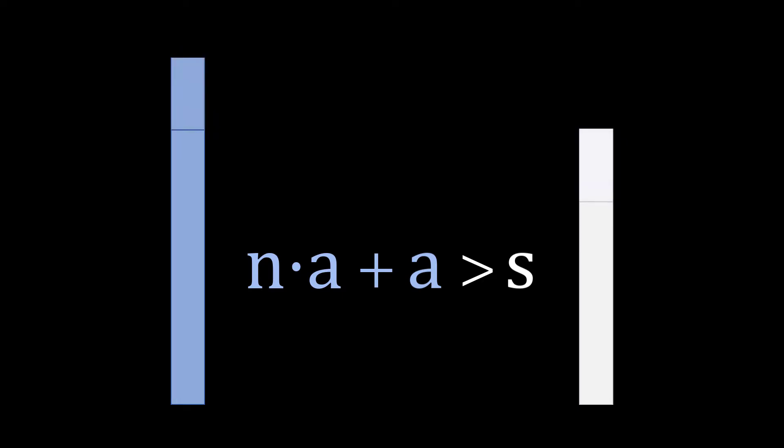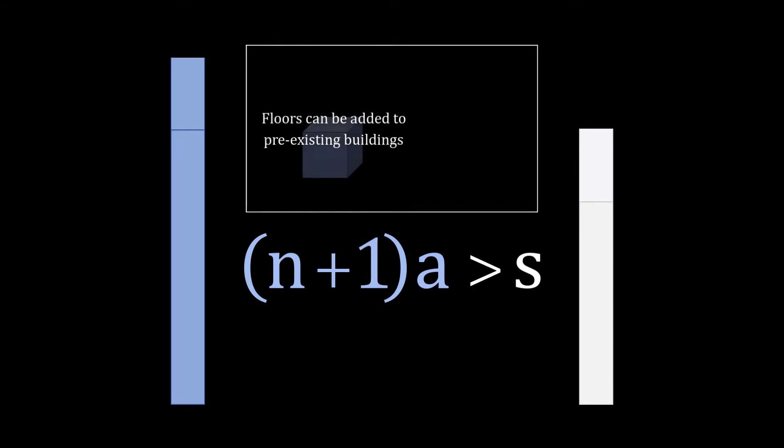You're increasing both buildings by the same height A, so the order of their heights should be preserved. Notice here that this building of height NA plus A is equivalently a building of N plus 1 times A. In other words, this building is one you can build, since it's within your ability to construct one more floor from a building that already exists.